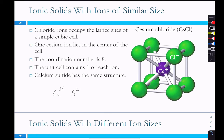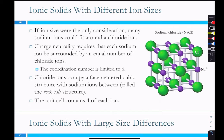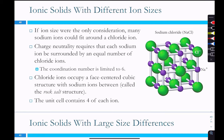Calcium is a 2+ and sulfur is a 2−, so they exist in a one-to-one ratio throughout the whole structure. For ionic solids with different-size ions like NaCl, if ion size were the only consideration we could pack sodium ions tightly around each chloride. But we need to balance charges — chloride only has a one-minus charge — so we can only have a one-to-one ratio, limiting the coordination number to six. The chloride ions occupy a face-centered cubic structure with sodium ions between them. This is the rock-salt structure.